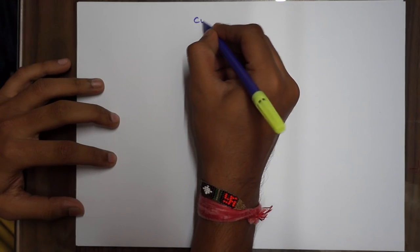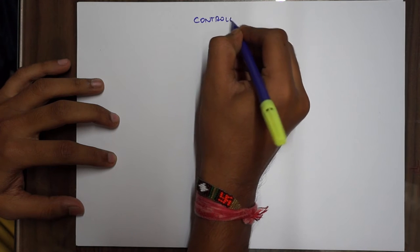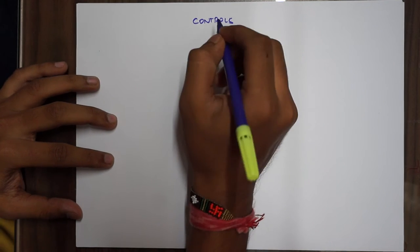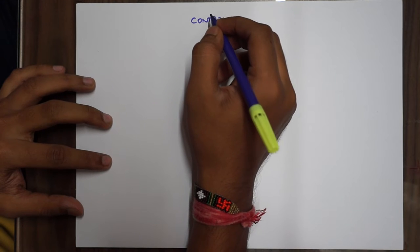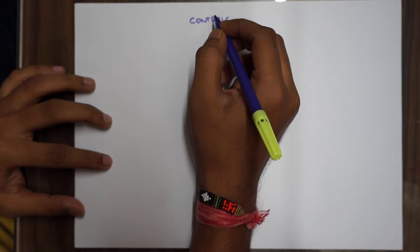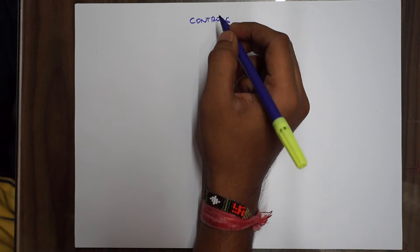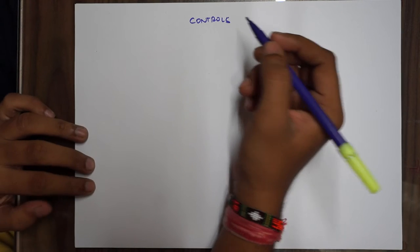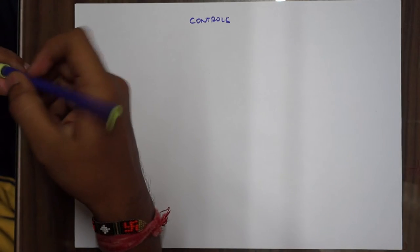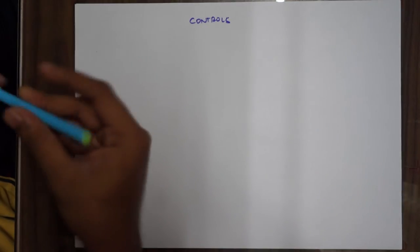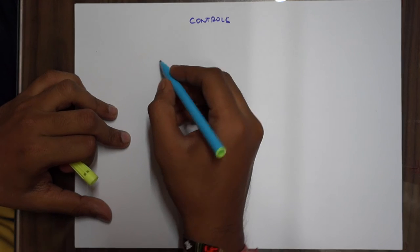Hello guys, we're going to discuss controls — simple yet confusing because of the axes involved. Students often get confused between the lateral and longitudinal axis. I'm going to draw a simple figure so that it's easier to understand and interpret.